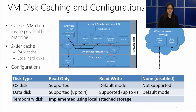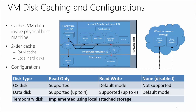In terms of disk caching configurations, they vary depending on which disk we're talking about. Taking the temporary disk out of the picture since it's not implemented as a VHD, for OS disk and data disk the default caching mode differs. For the OS disk the default is read/write caching. For data disks, out of the box you see no caching enabled. The OS disk is set this way to gain extra boot performance.